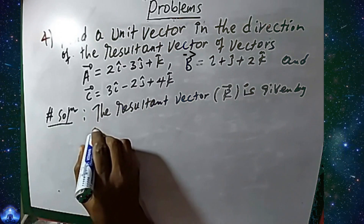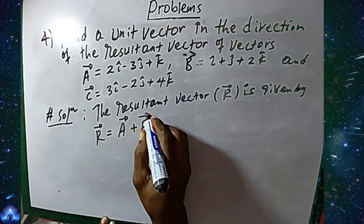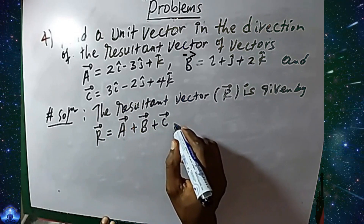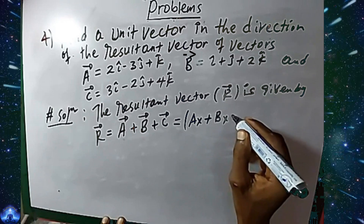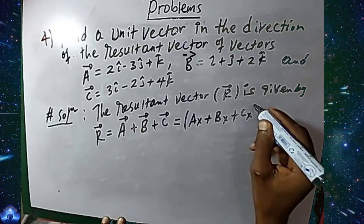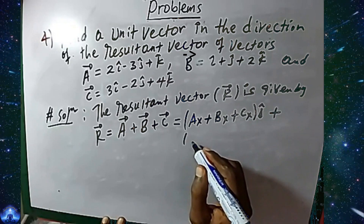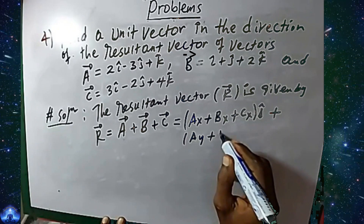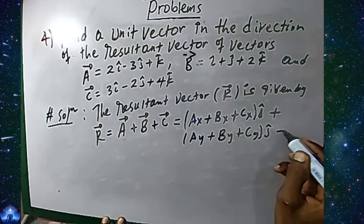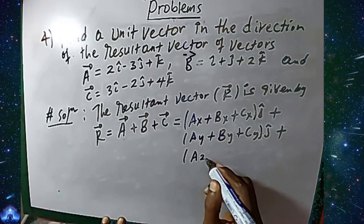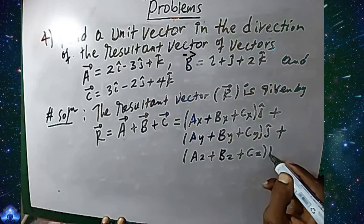The resultant vector r equals vector a plus vector b plus vector c. This equals (ax + bx + cx) in the i direction, plus (ay + by + cy) in the j direction, plus (az + bz + cz) in the k direction.